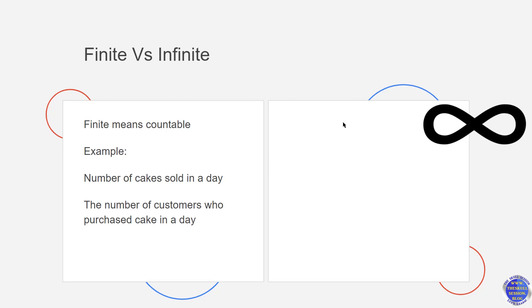But infinite means uncountable. For example, the taste of the cake is qualitative data and it is not easy to count. The satisfaction level of the customer is also infinite in nature. Sometimes even countable items will be considered as infinite if the number is really large. For example, suppose you are trying to find out the number of cakes sold in the last five years or ten years, then it is going to become infinite in nature.